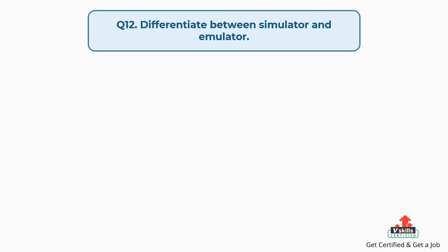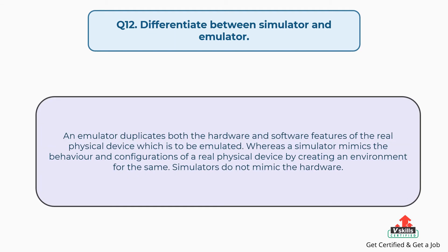Question number 12: Differentiate between simulator and emulator. An emulator duplicates both the hardware and software features of the real physical device which is to be emulated. Whereas a simulator mimics the behavior and configurations of a real physical device by creating an environment for the same. Simulators do not mimic the hardware.